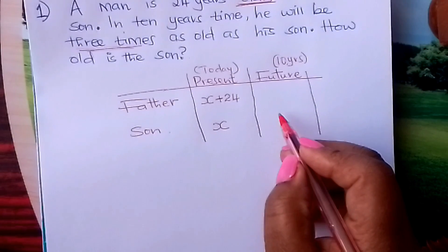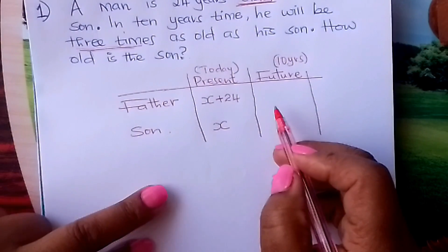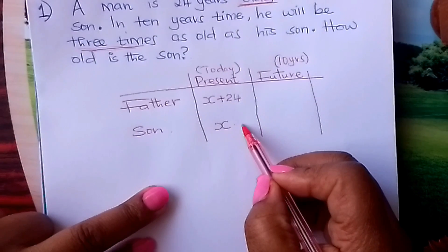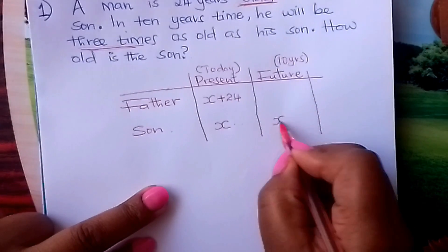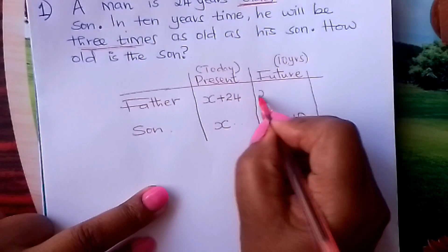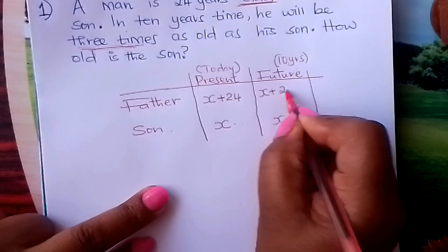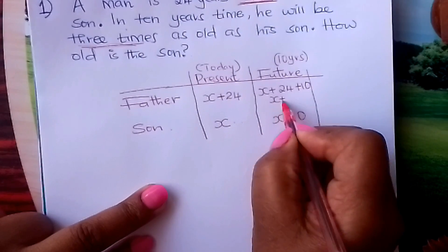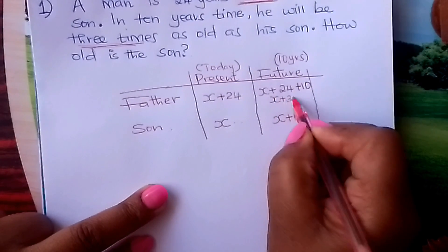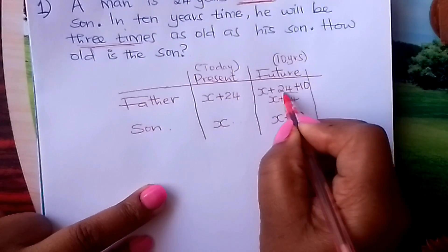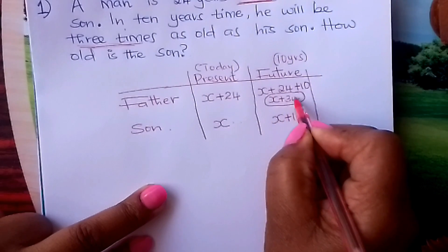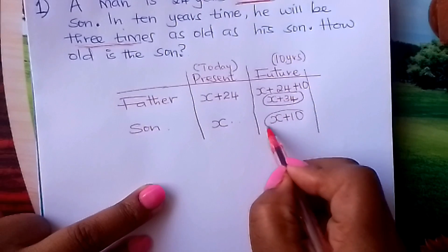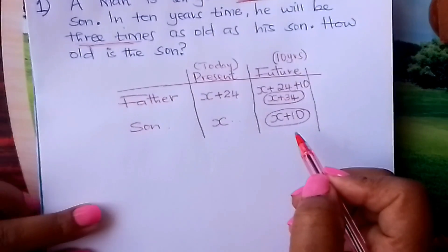We come and get their age in 10 years' time. Each one of them will have gained 10 years. So the son will be X plus 10 years. The father will be X plus 24 plus 10 years, which gives us X plus 34. So the father's age will be X plus 34 years, and the son's age will be X plus 10.